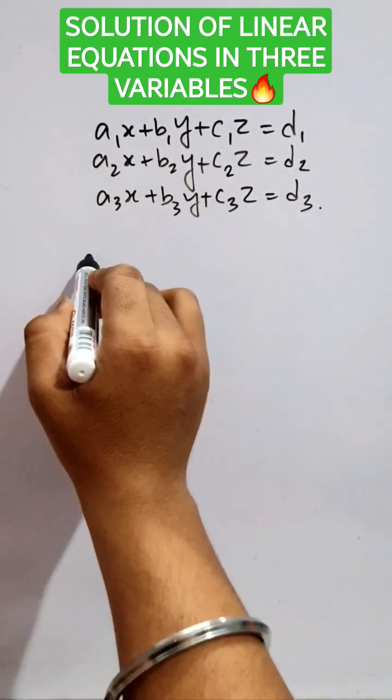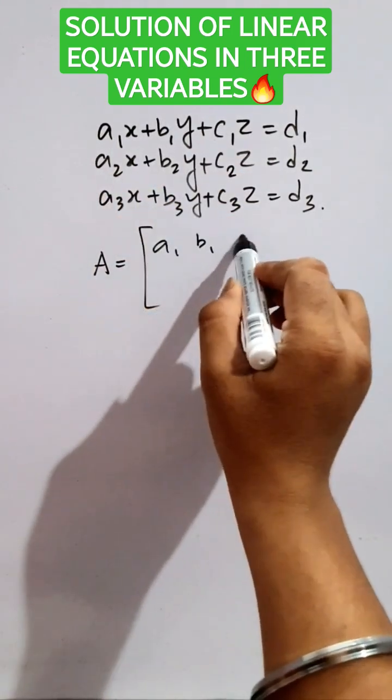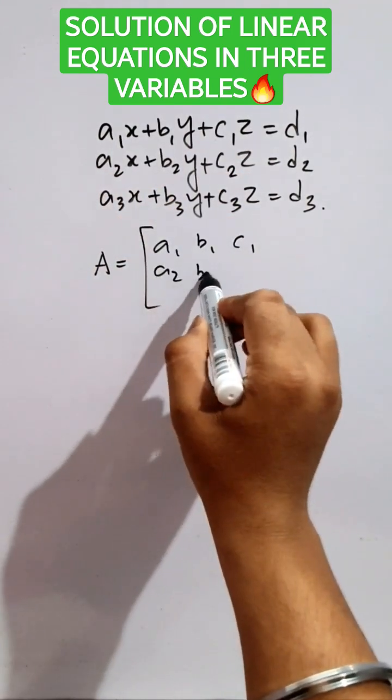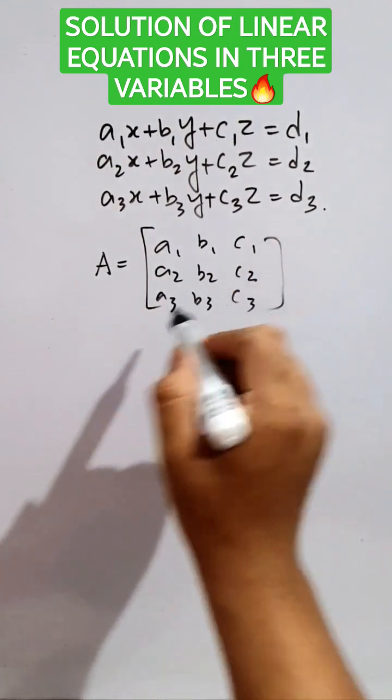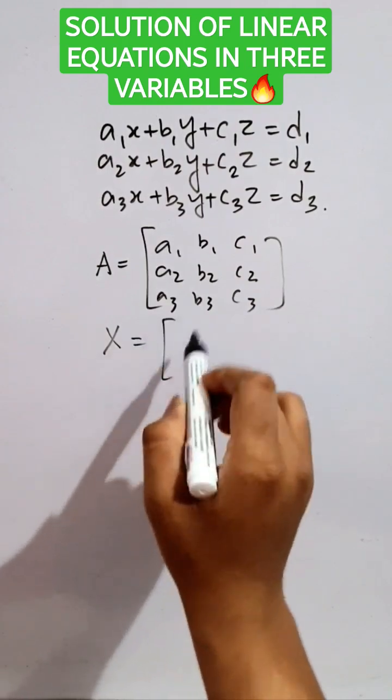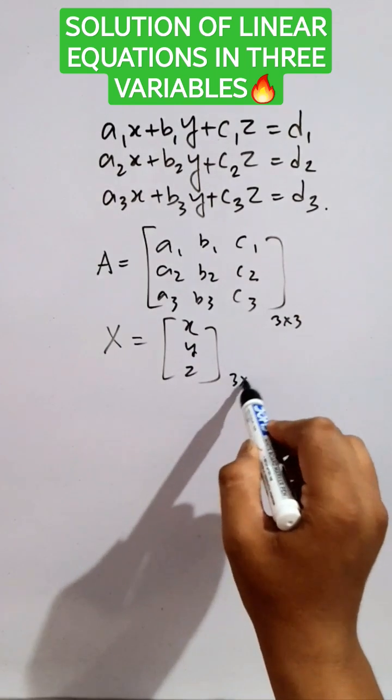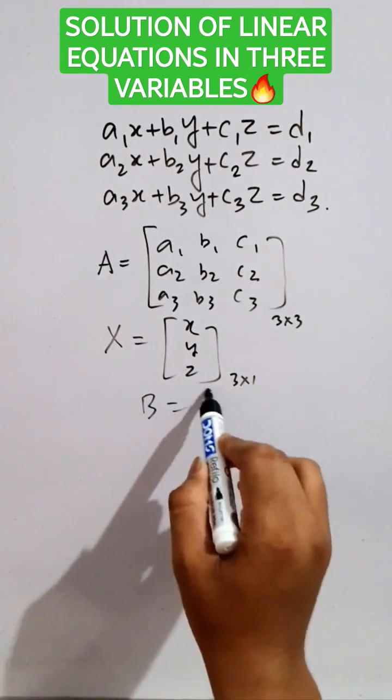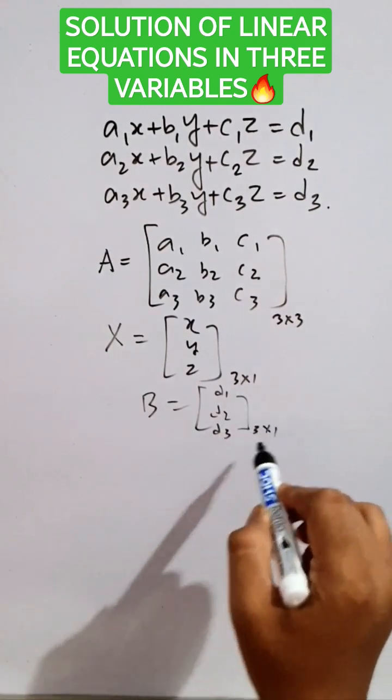We can assume the coefficient matrix as A in this pattern, and capital X will be the unknown matrix. A is of the order 3 by 3, X is of the order 3 by 1, and B will be the matrix including the constant terms, also of the order 3 by 1.